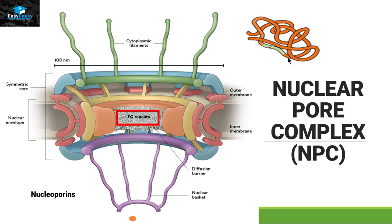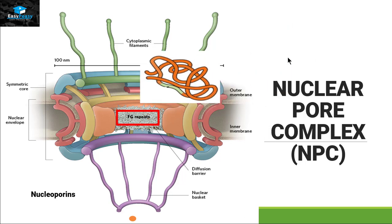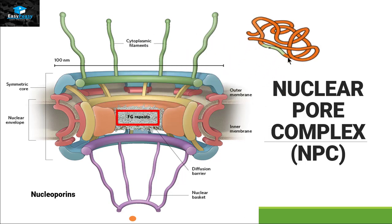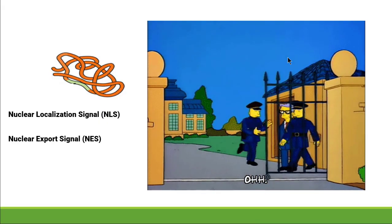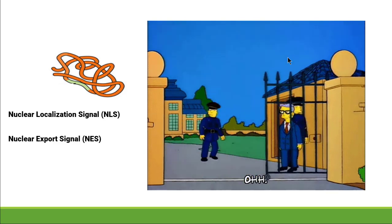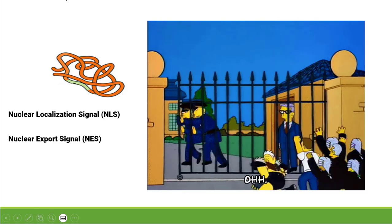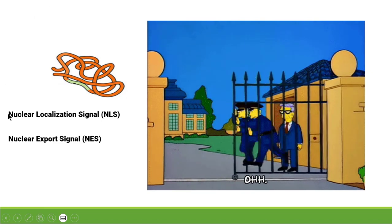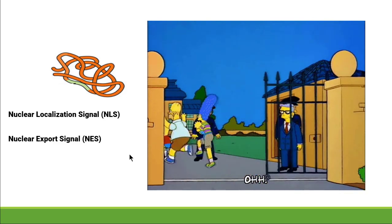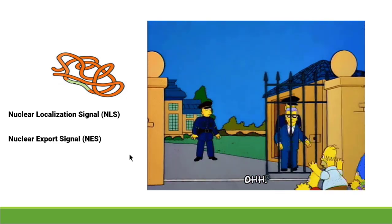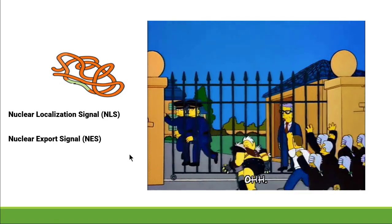If a small molecule wants to enter the nuclear pore, it can pass through this mesh easily. However, a larger protein will not be allowed to enter unless it has a signal — a permit to enter inside that gate. The permit that allows a protein to enter inside the nuclear pore is called the nuclear localization signal, or NLS. If a protein wants to get out of the nucleus, it will have a signal called the nuclear export signal, or NES.